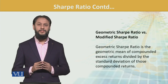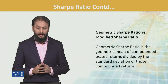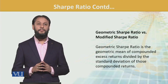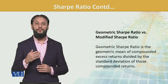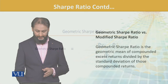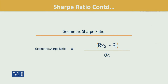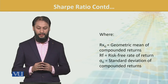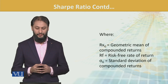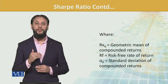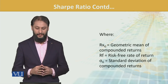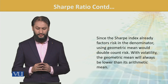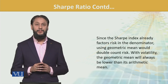Geometric Sharpe ratio versus modified Sharpe ratio — यह उसी की थोड़ी सी further extension है. Geometric Sharpe ratio is the geometric mean of the compounded excess return divided by standard deviation of compounded returns. Geometric Sharpe ratio = RxG minus RF over standard deviation of G, where RxG is the geometric mean of compounded return. Since the Sharpe index already factors risk in the denominator, using geometric mean would double count the risk.